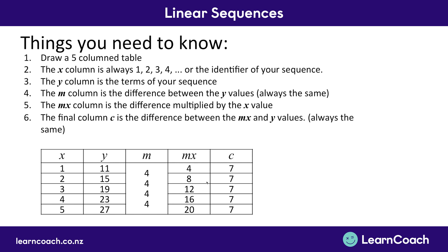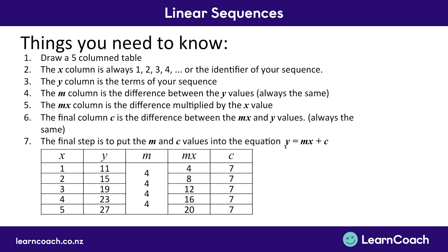Note that C can be negative — if MX was 14 instead of 4, we'd need to take away 3 to get to Y, making C equal to negative 3. M can also be negative: if your sequence is going down by 4 every time, M would be negative 4. Once you've filled the table, remember the formula Y equals MX plus C — plug in M and C and you have your answer. In this example, M of 4 and C of 7 gave us Y equals 4X plus 7.